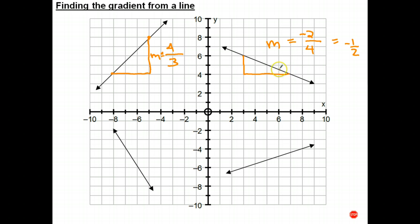By the way, if I'd gone from that point to that point, I would have got the same answer. Here my rise would be positive 2, but my run to get from that point to that point would be negative 4. And positive divided by a negative is still a negative. 2 divided by 4 simplifies to 1 half. So it doesn't matter whether you go from that point down to that point or that point back to that one. Because the graph's going down, we know we have a negative gradient. Stop the video and work out the gradient of the other two lines, please.